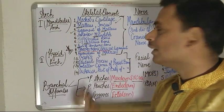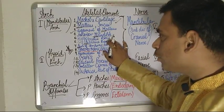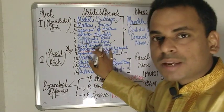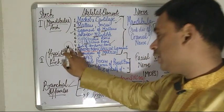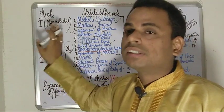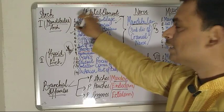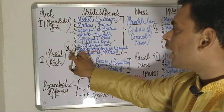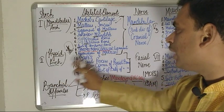The next derivative from the mandibular arch is the ligament of the malleus, then the anterior mandible, the zygomatic bone, the palatine bones, the part of the temporal bone, and the maxilla. A very important star point is the sphenomandibular ligament, which is also derived from the first arch or the mandibular arch — I'll explain why this is starred when discussing the second arch.